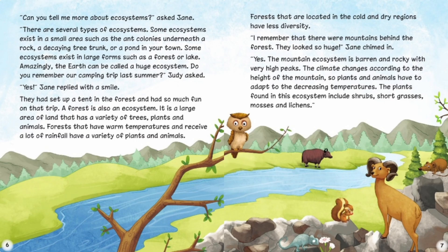'Can you tell me more about ecosystems?' asked Jane. There are several types of ecosystems. Some ecosystems exist in a small area such as the ant colonies underneath a rock, a decaying tree trunk, or a pond in a town. Some ecosystems exist in large forms such as a forest or lake. Amazingly, the earth can be called a huge ecosystem.